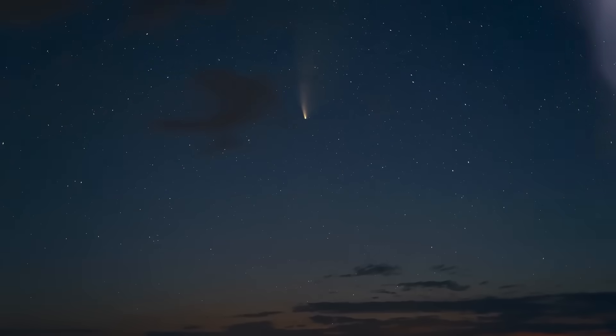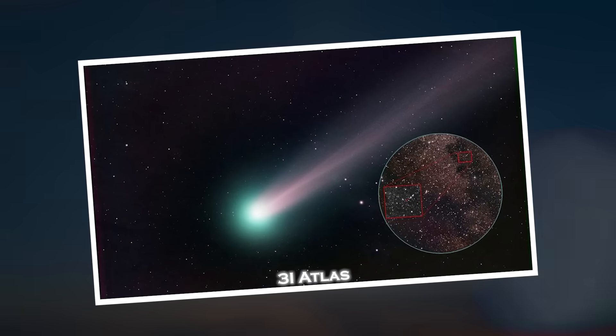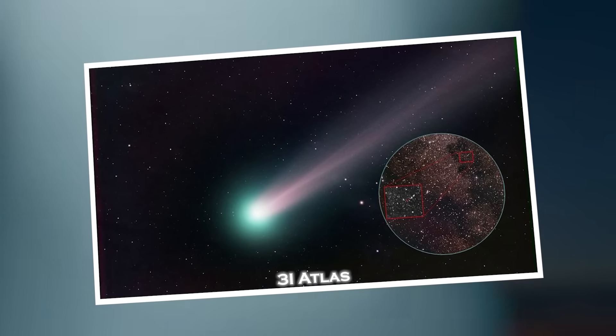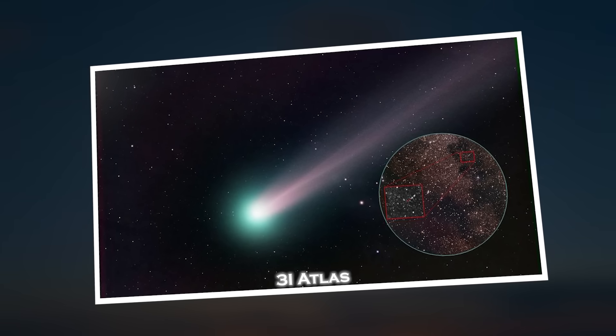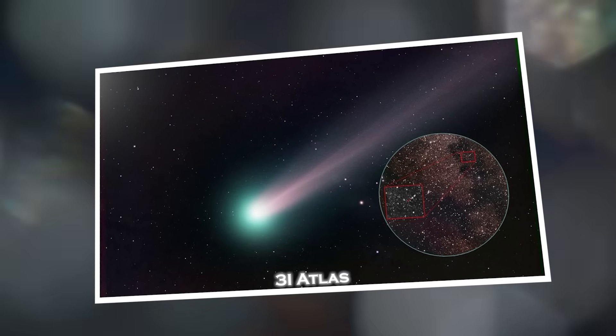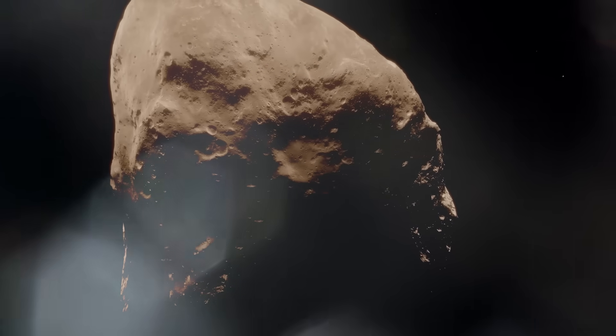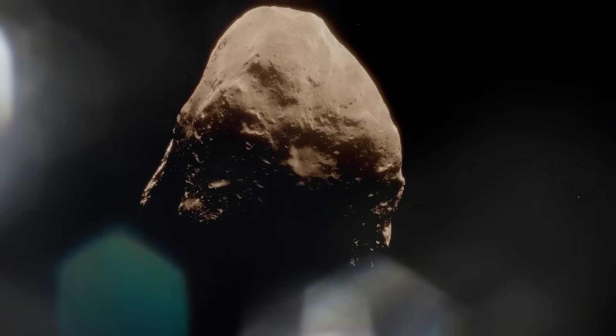First detected between June 25th and 29th, the object now officially named 3I Atlas appeared on the radar of ATLAS, a high-speed sky scanning system designed to catch potentially hazardous objects before they surprise us. But this time, ATLAS didn't find just another asteroid. What it caught was different. Its speed exceeded 152,000 miles per hour.